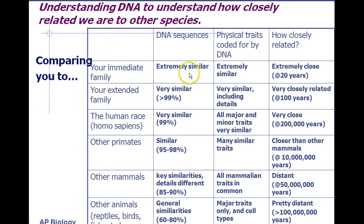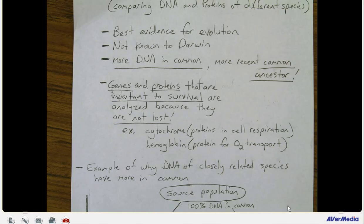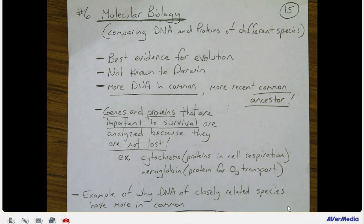Comparing DNA sequences: your immediate family — very similar DNA, closely related within about 20 years. Extended family — a little more distantly related, still very similar. The entire human race has basically the same DNA — over 99.9% — and we are very closely related from about 200,000 years ago, with modern humans around 100,000 years ago. Other primates are 95% to 98% similar to us; we share traits like nails, flat faces, and opposable thumbs, and split from them about 10 million years ago. Other mammals — we still share hair, warm-bloodedness, and a four-chambered heart — but have more different DNA. Other animals like reptiles and birds we share some things with, but have a more distant relationship.